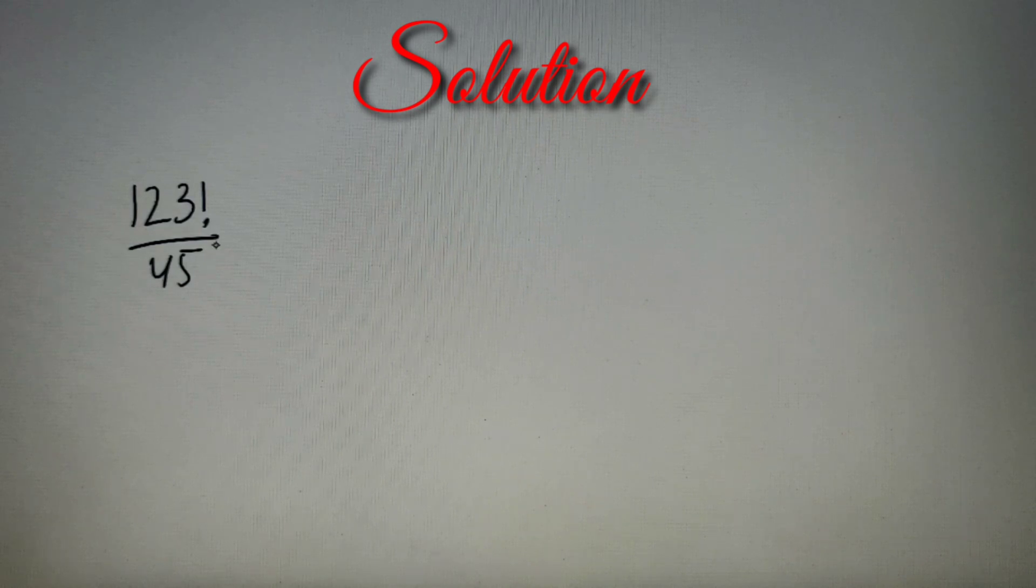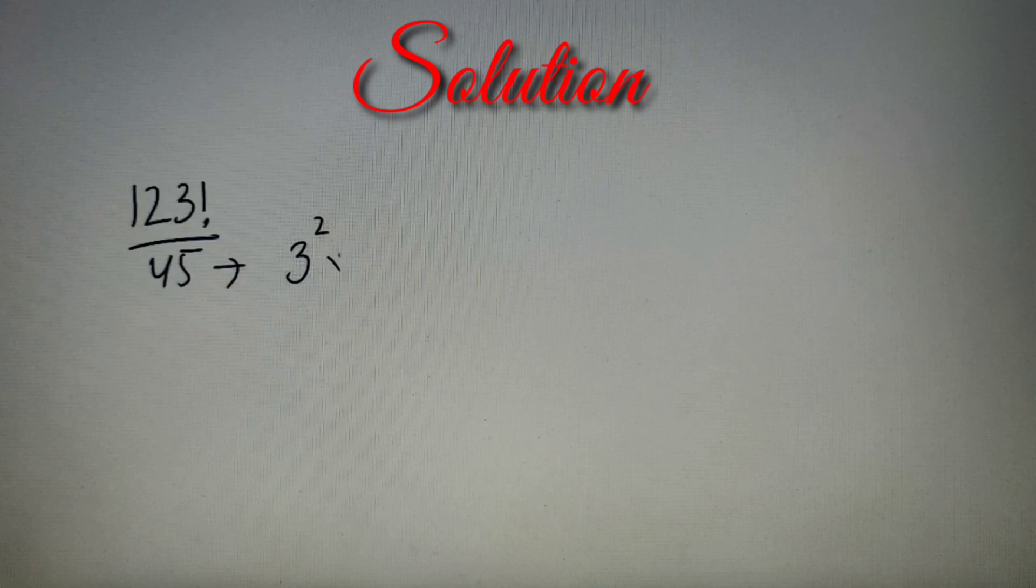According to our given question, we have to find the highest power of 45 in 123 factorial. To find out the highest power of any given number in any n factorial, the first step is to prime factorize the number. Now 45 upon prime factorization gives us a result as 3 squared into 5.